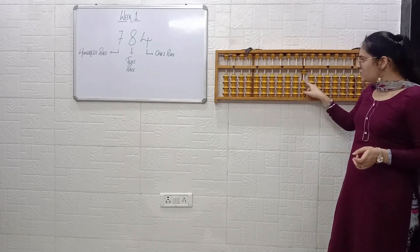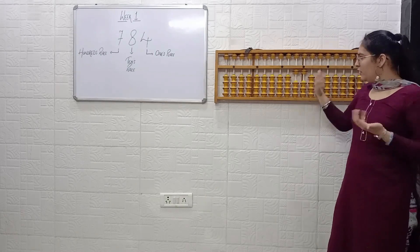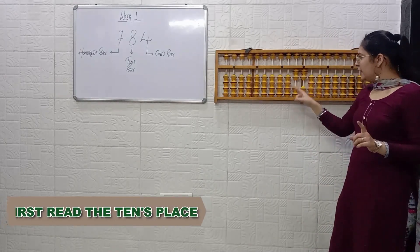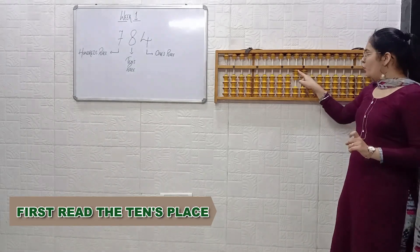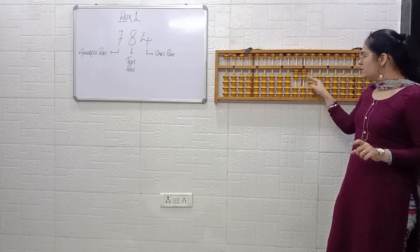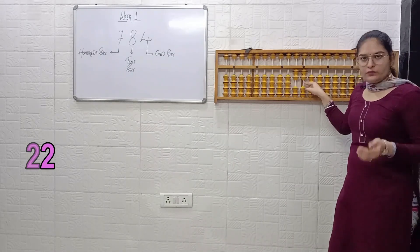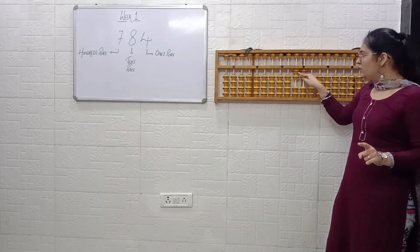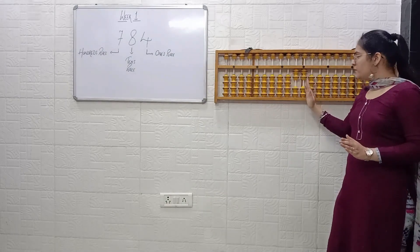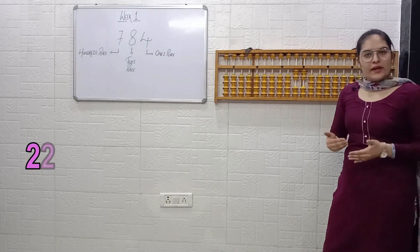2 placed at ones place will be 2. So this is 1, 1 — that is 11. Next example: first read the tens place — 1, 2. Keep that 2 in your mind, then read the ones place — 1, 2. So it is 2, 2 — that is 22. The mistake to avoid is reading all beads continuously as 1, 2, 3, 4. You must first read the tens place, then the ones place separately.